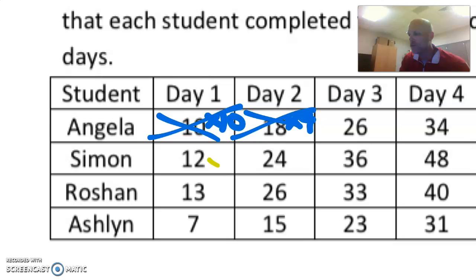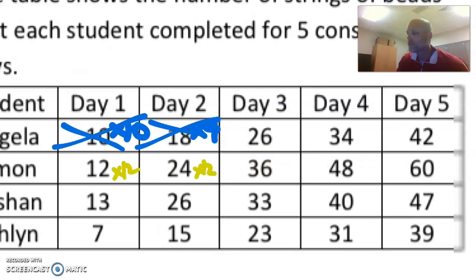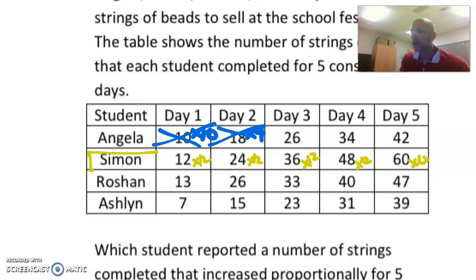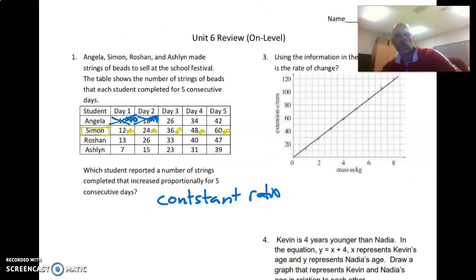Let's look at Simon. Simon from 1 to 12 is times 12. 2 to 24 times 12, 3 to 36 times 12, 4 to 48 times 12, and 5 to 60 times 12. So right now I'm looking at Simon thinking, yes, that is a constant ratio of 1 to 12, 1 day to 12 string beads.